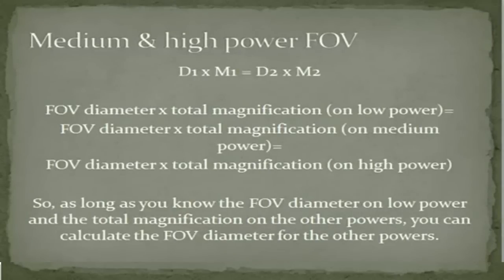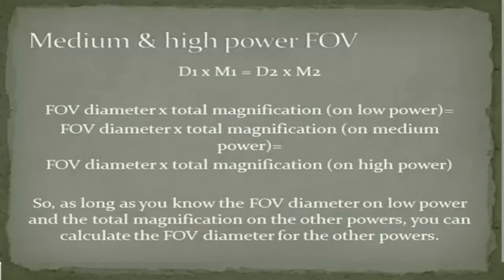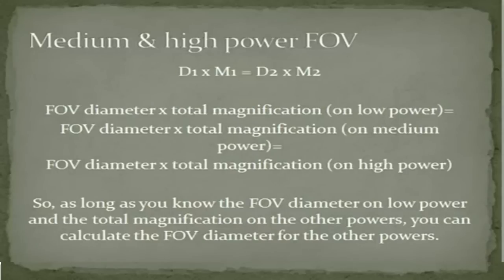Once you've got that, you can calculate your field of view for the other power settings using the formula: d1 × m1 = d2 × m2. Because every time you change power, your field of view decreases while your magnification increases — meaning the diameter of your field of view and your total magnification are inversely proportional. So if you multiply them together at low power, you get the same value as at medium or high power. As long as you know the field of view diameter at low power and the magnification at other powers, you can calculate the field of view for those settings.